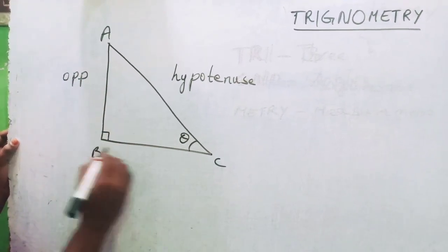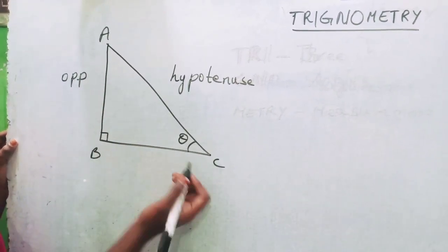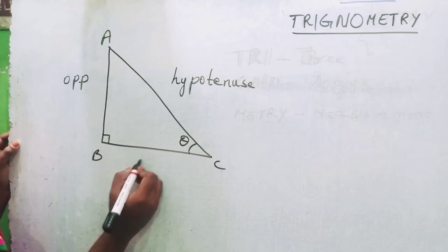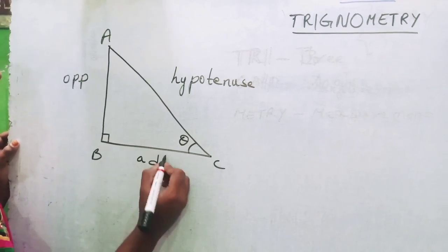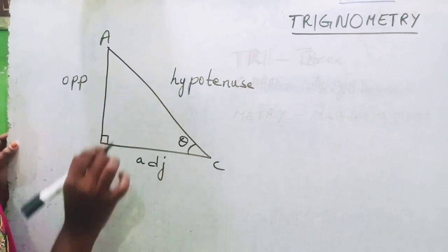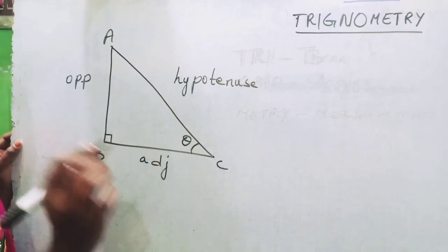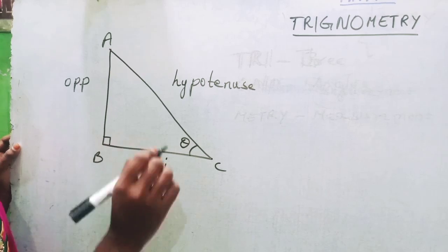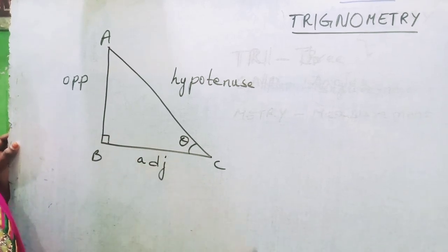And the other side, BC, we name it as adjacent. Based on these sides, we learn about trigonometric ratios.